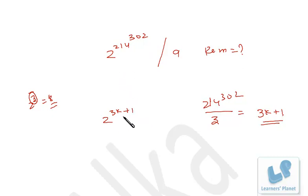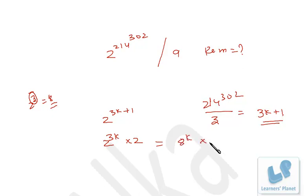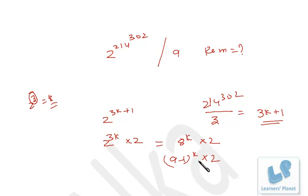So this number becomes 2 raised to (3k+1), which is 2 raised to 3k, times 2 — which is 8 raised to k, times 2. Now 8 is 9 minus 1, so if divided by 9 the remainder is minus 1 raised to k. But there is a flaw: we don't know whether k is even or odd, and in both cases the answer will be different.